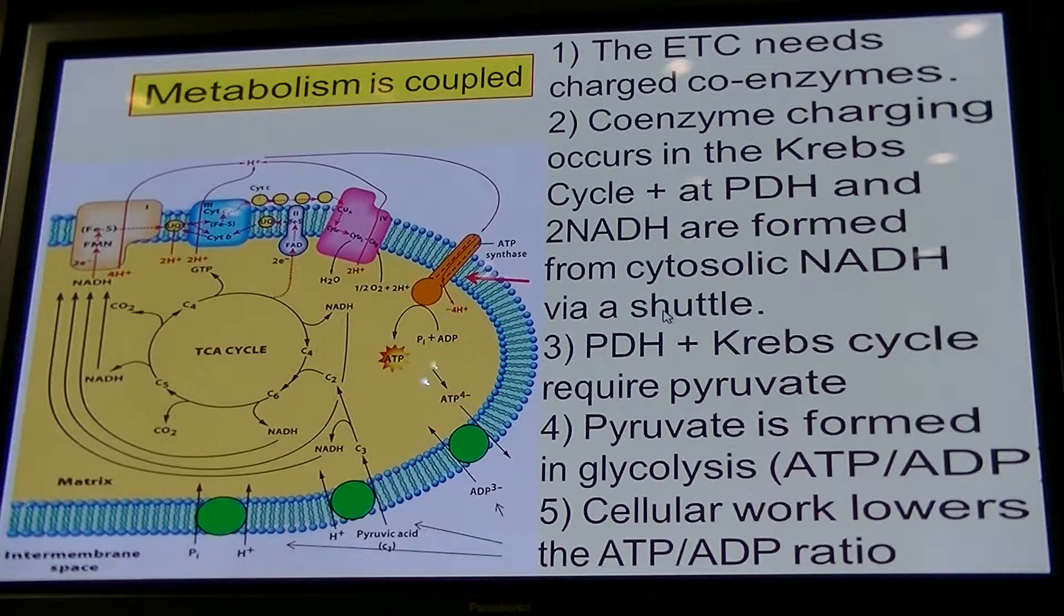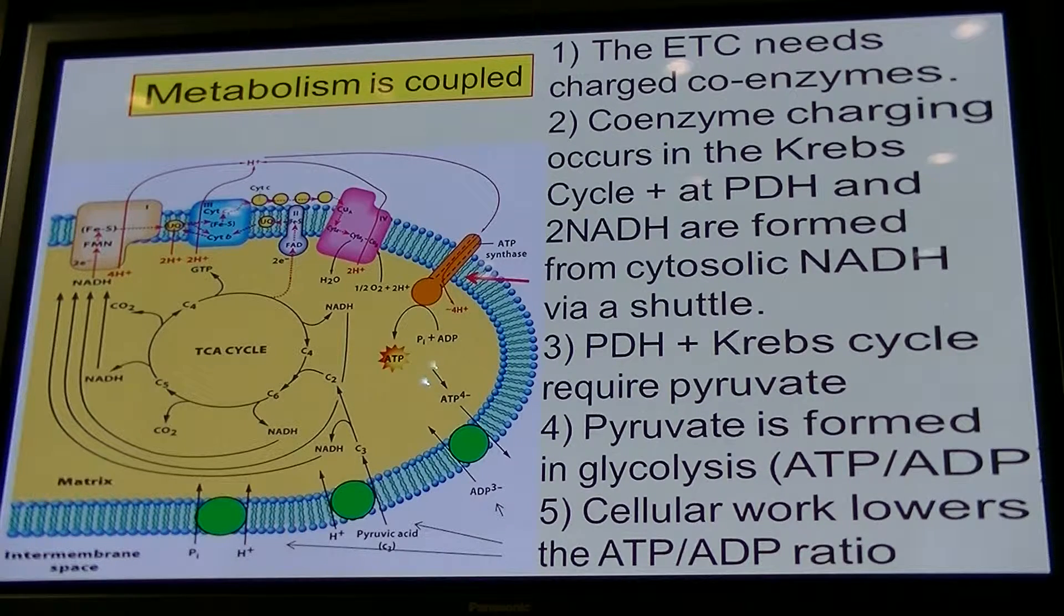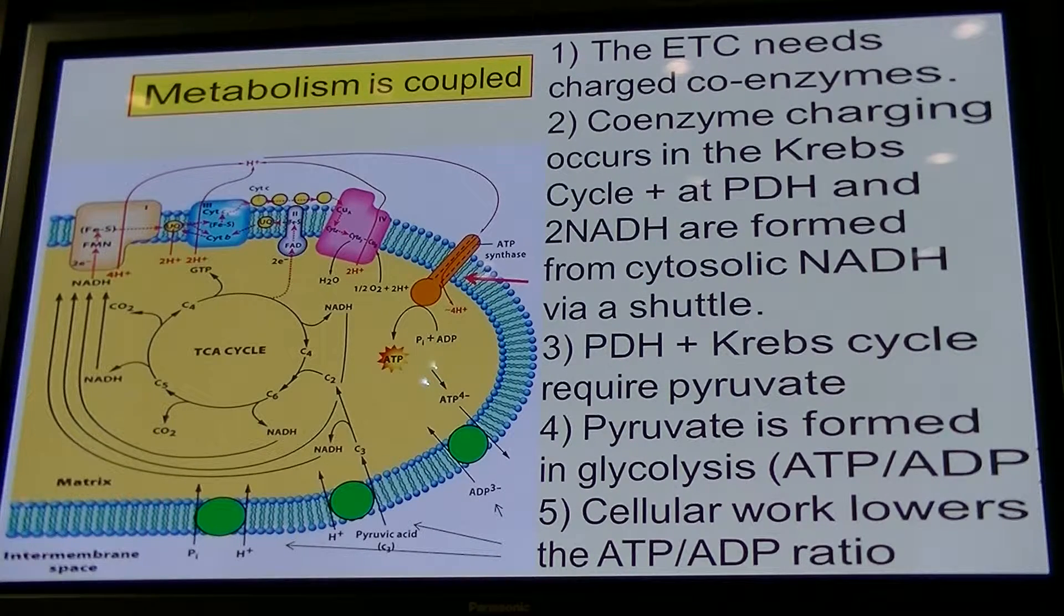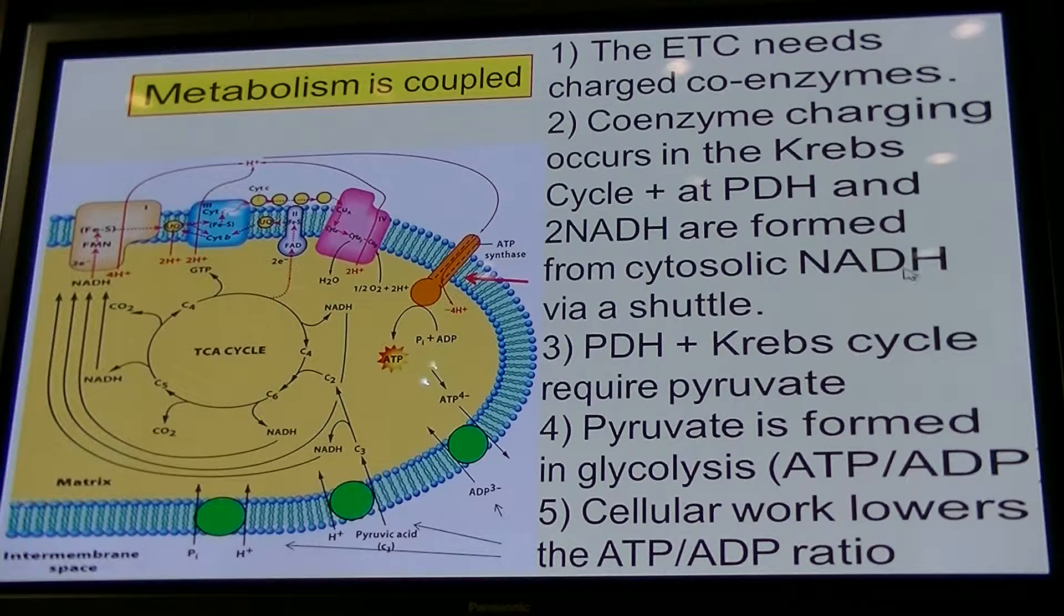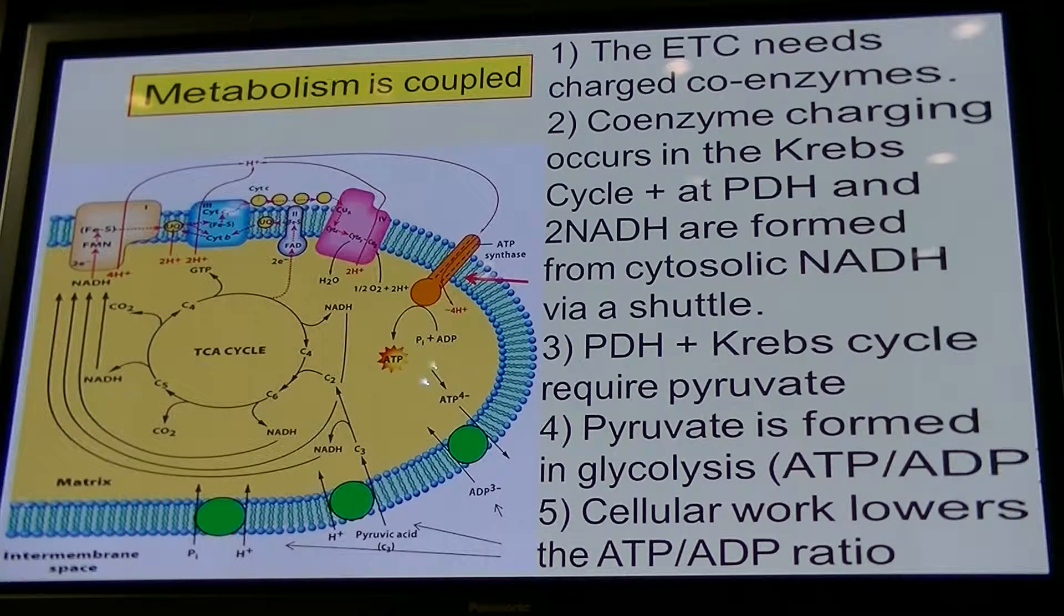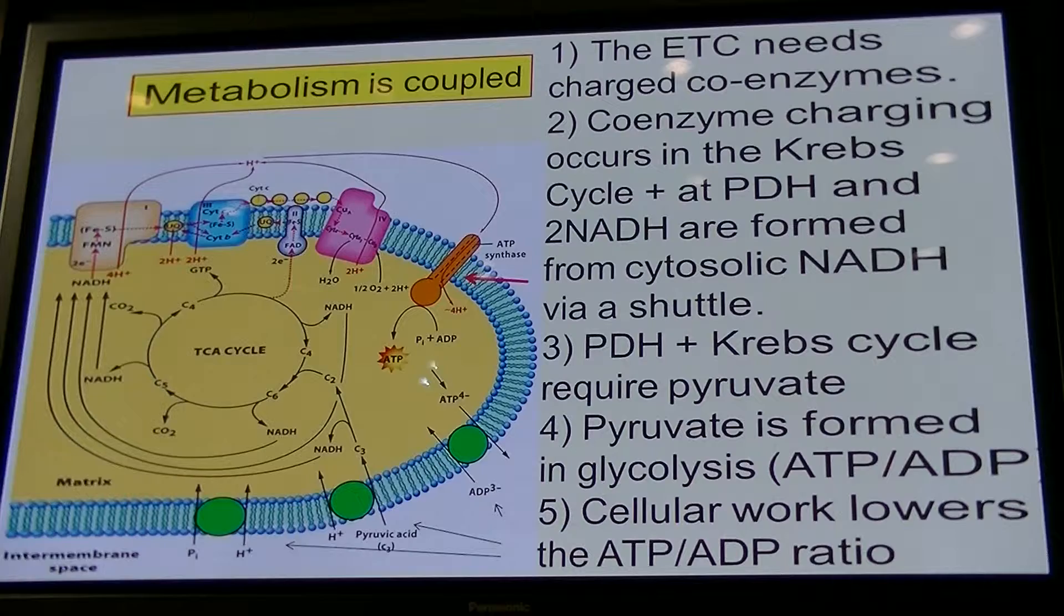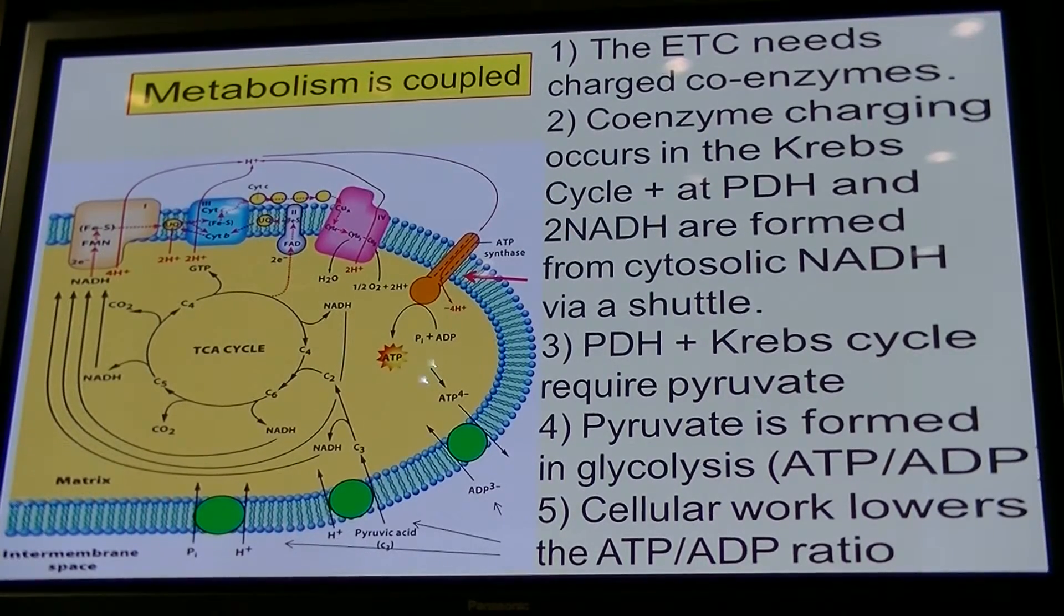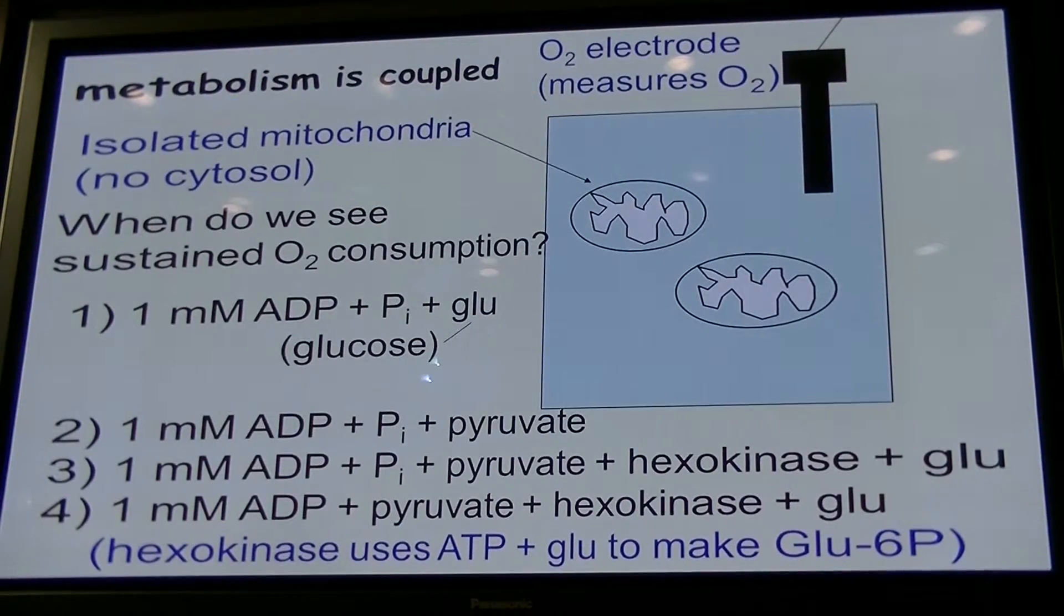So everything is coupled. If you're not doing cellular work and utilizing your ATP, your mitochondria are not pumping protons and are not making ATP. Everything is coupled. If you take the coupling away, everything stops. So if you separate steps of the process, then you might have to provide something.